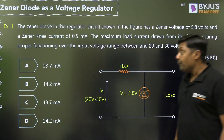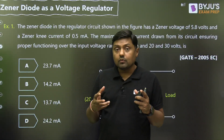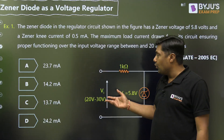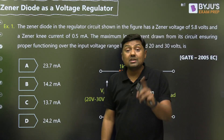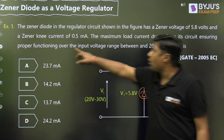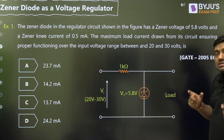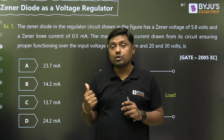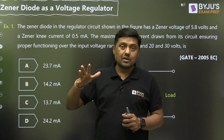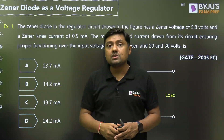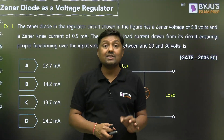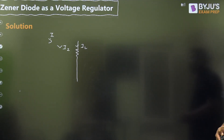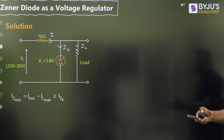Some students make the mistake of using 30 V (the maximum input), which gives 23.7 mA — but that is wrong. The keyword is 'ensuring proper functioning over the input voltage range,' meaning the Zener must remain in breakdown across the entire range. You must use the two equations given. Please revise them and use them to solve all previous year questions on voltage regulators using Zener diodes — that is the fastest way.